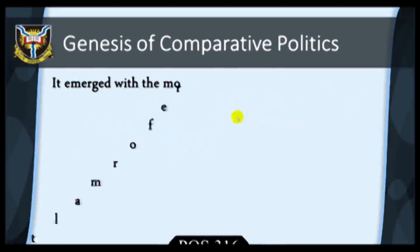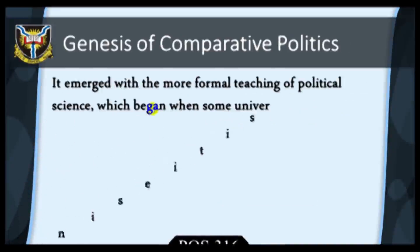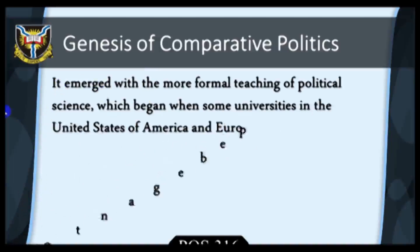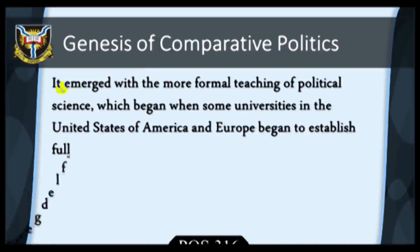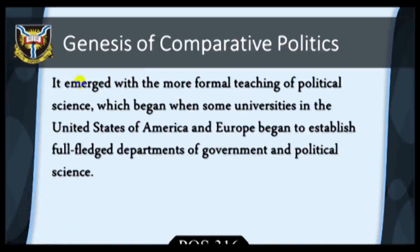sociologists, social psychologists and even natural scientists. In simple terms, contemporary comparative politics emerged from the more formal teaching of political science, which began when some universities in the United States of America and Europe began to establish full-fledged departments of government and political science.